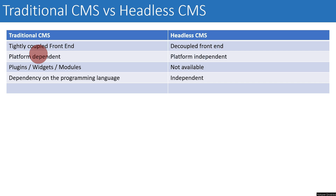In traditional CMS there are programming language dependencies. For example, if you are working in Joomla, you need to know Joomla inside and out plus PHP to make modifications. But in headless CMS, if a new technology comes tomorrow you can switch the entire front-end application without disturbing your back end. Basically, the migration cost is reduced when you use headless CMS because your data remains in the same place — you are not changing the data.